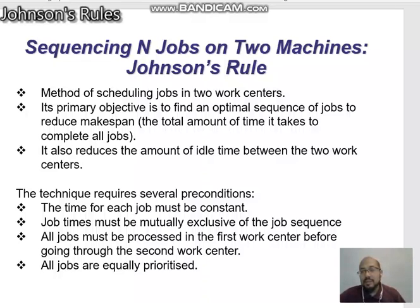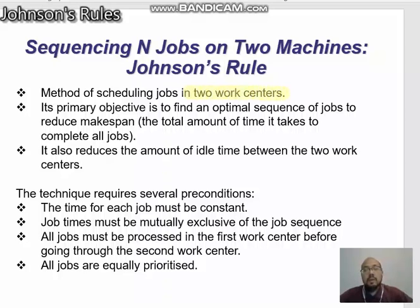Bismillahirrahmanirrahim, Assalamualaikum. In this session I want to discuss sequencing jobs on two machines using Johnson's Rules. Johnson's Rules is a method of sequencing jobs in two work centers. Its primary objective is to find an optimal sequence of jobs to reduce makespan — the total amount of time it takes to complete all jobs.